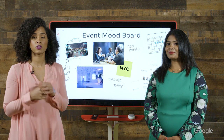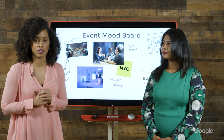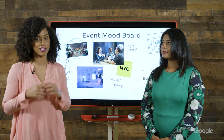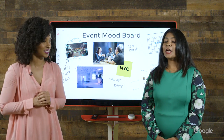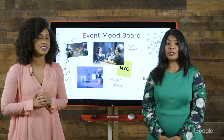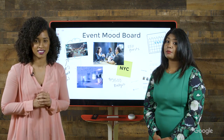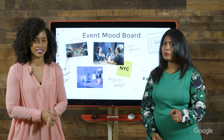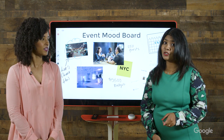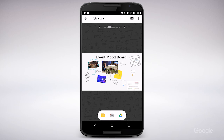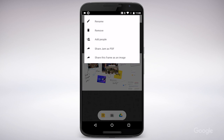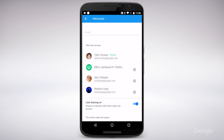Jamboard supports up to 16 touch points at once on a single device. And even more people can join using the app, so collaboration is a cinch. To share my Jam with others, I just open the menu, select Add People, and add them by email address or name.